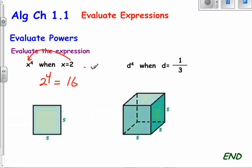2, 4, 8, 16. Yep, 16. And then if I look at d to the fourth when d is one-third, well, this would be one-third to the fourth power. That makes it 1 to the fourth power over 3 to the fourth power.